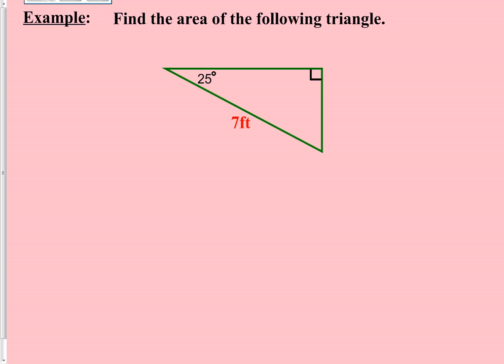Moving on. These problems can get fairly creative with the type of information that's missing and the methods needed to find it. Find the area of the following triangle. It's a clever problem because the area formula for a triangle is one-half times base times height. But when you look at the triangle, neither the base nor the height is provided. And if you think of Pythagorean theorem, you're missing both legs — you only have the hypotenuse — so Pythagorean theorem will not work here.